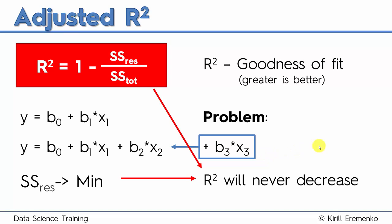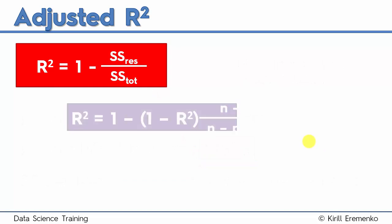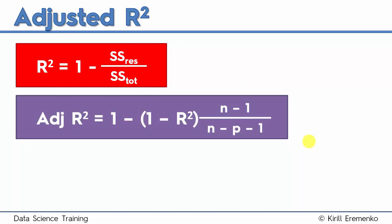So we've got to come up with a different parameter to measure goodness of fit. And that is where adjusted R squared comes in. And this is the formula for adjusted R squared. Here, P is the number of regressors, so the number of independent variables. N is the sample size.